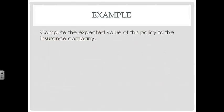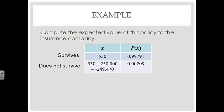We're going to compute the expected value of the policy to the insurance company. Here's our table. We have an X that she survives. That's the $530. And the probability that she's going to survive is 0.99791.